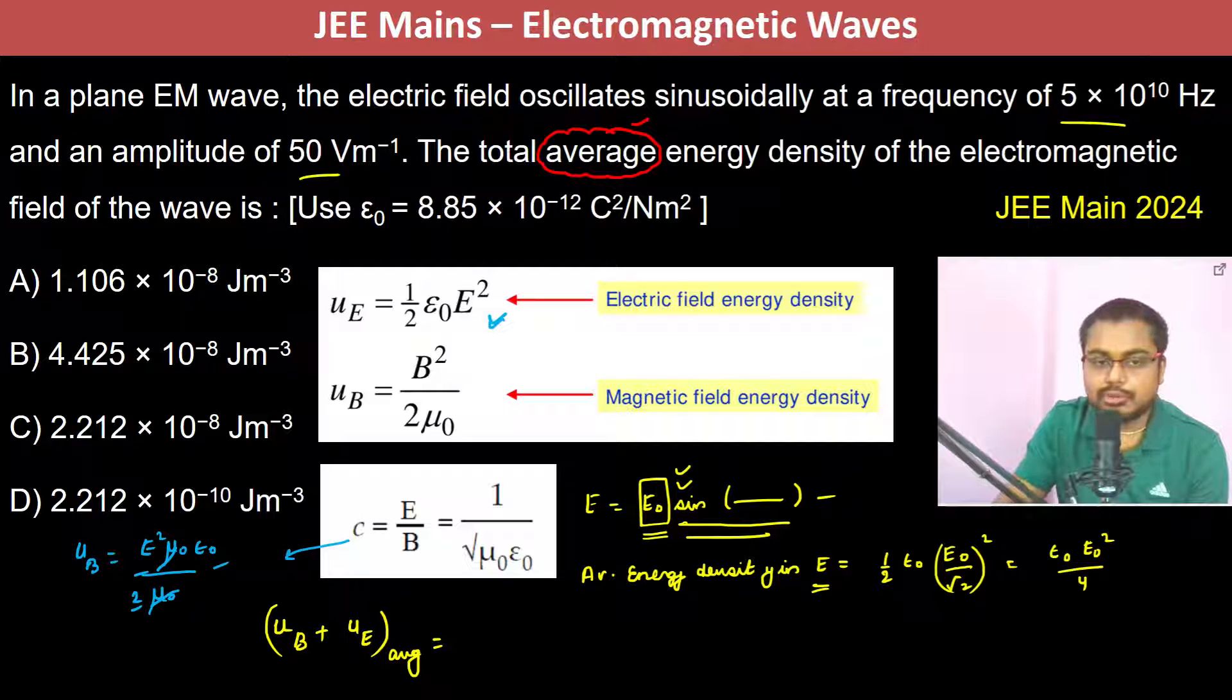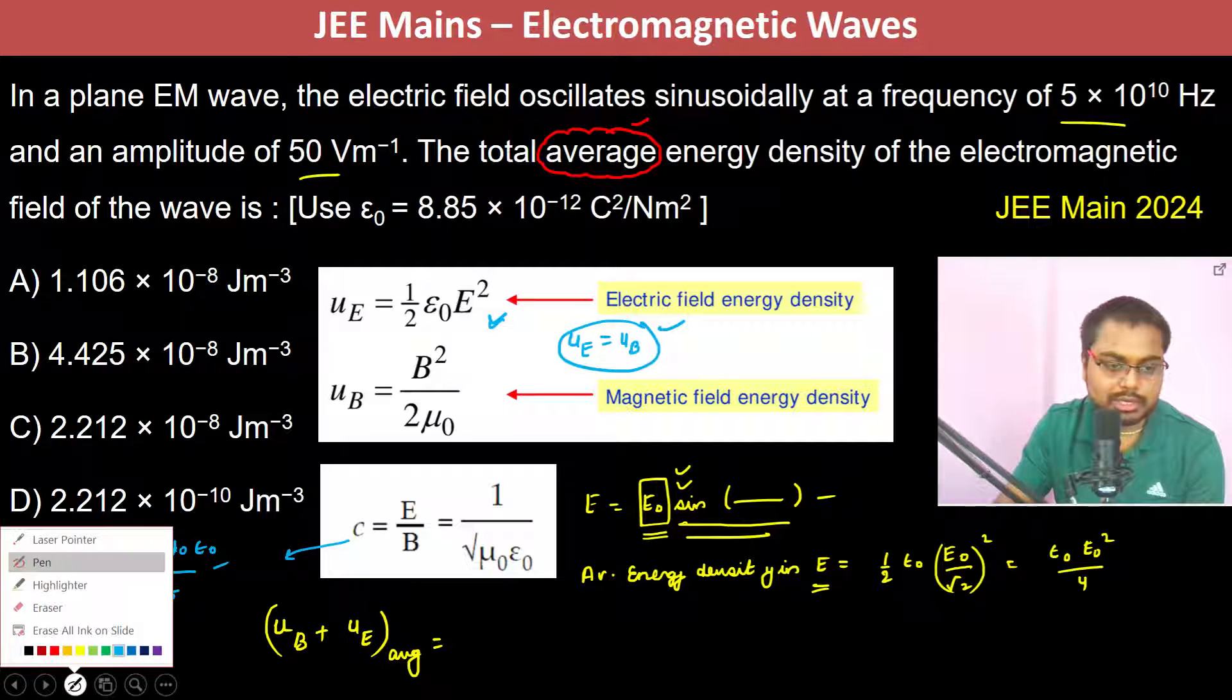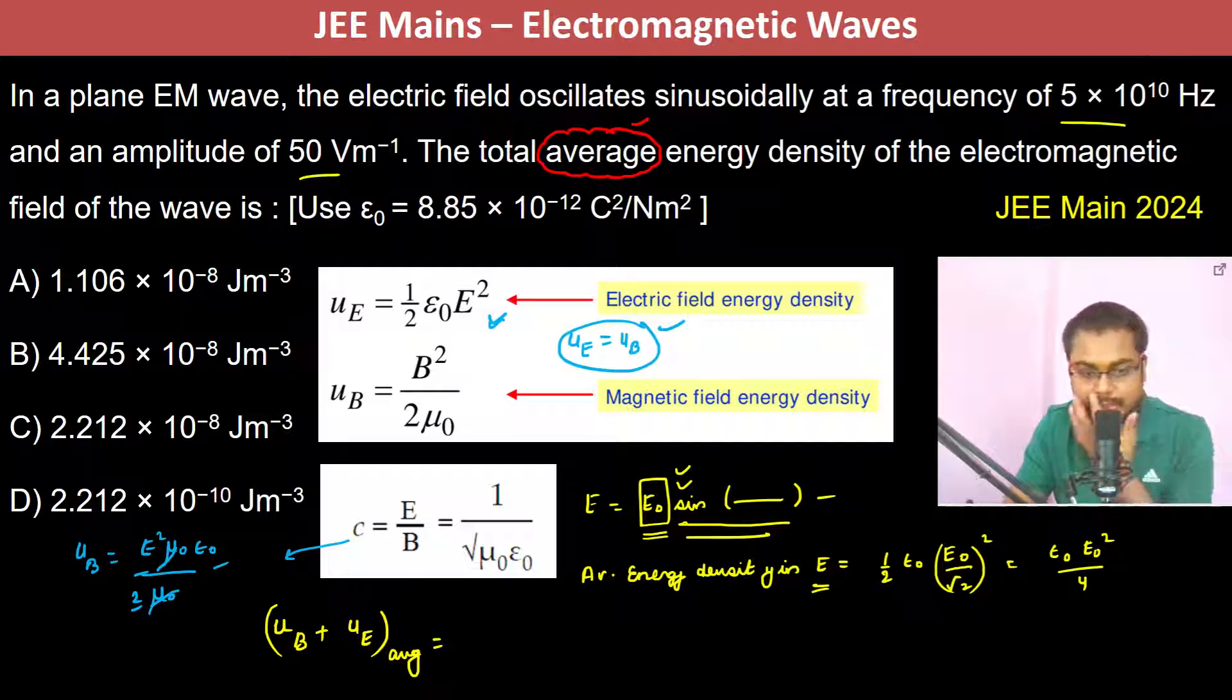So therefore numerically both are equal. UE and UB are both equal. So now the total average is going to be 2 into epsilon naught E square by 4, which is half epsilon naught into E square, which equals half into epsilon naught is 8.85 into E square.